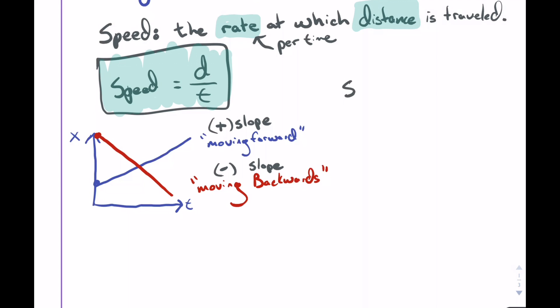This is super important for us to notice, because the slope tells us more than just the speed of the car. It tells us the speed, but it also tells us the direction the car was traveling, whether that direction be positive or negative.